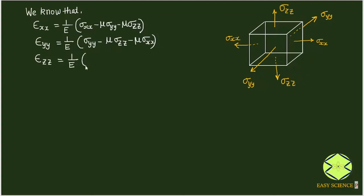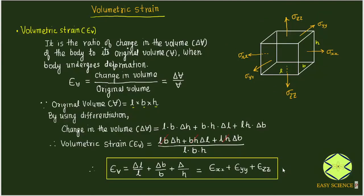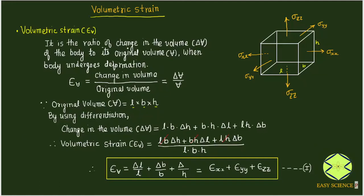The total strain in the z direction is (σzz − μ·σyy − μ·σxx)/E. We have already done this earlier — the linear strains in the respective directions are like this. Using equation 1 (volumetric strain = sum of directional strains) and these three equations collectively as result 2, we can find out the volumetric strain.